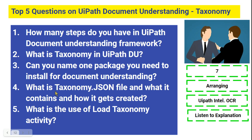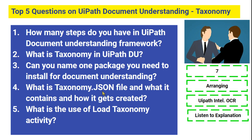Fourth: What is the taxonomy.json file and what does it contain? The taxonomy.json file is created when you go to Taxonomy Manager and create the group name, enterprise name, department name, and add document types. When you save it, a file is created in your project under the Document Understanding folder called taxonomy.json. This file contains all the details of how we have organized the Taxonomy Manager. I have shown this in the previous video — please do watch it.